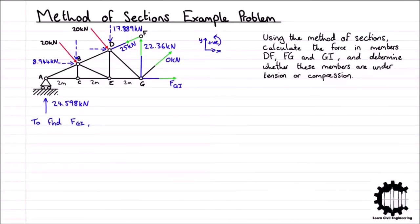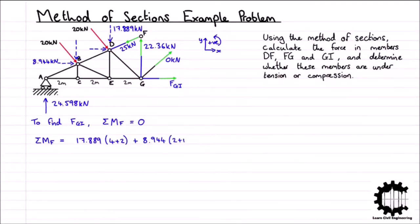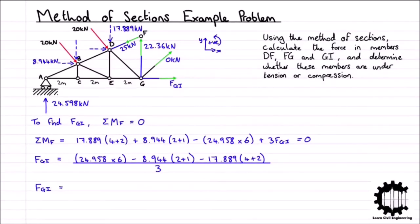Finally, to solve the internal force in member GI, we take moments about node F equal to zero. Taking anticlockwise as positive, the sum of moments about node F equals: 17.889×(4+2) + 8.944×(2+1) − 24.958×6 + 3·FGI = 0. Rearranging, FGI = 4.47kN. Since we assumed tension and the value is positive, the force of 4.47kN in member GI is tensile.